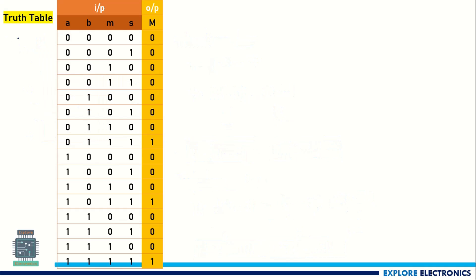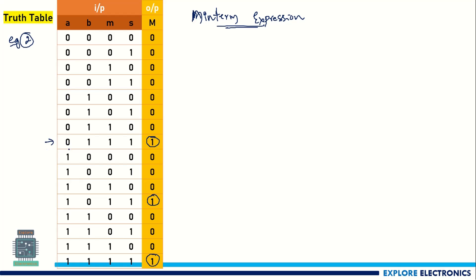So let me take a more complex example. This is example 2. Let us write the min term and max term expressions for this truth table. To write the min term expression, we need to consider where 1 is generated at the output. These are the three cases having 1. The output is capital M, so I am writing it as M is a function of a, b, m, s. Don't get confused with small m and capital M — here capital M is just the output variable name, not related to min term or max term.